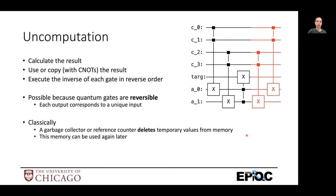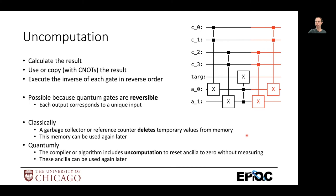So when we do this classically, we have garbage collector reference counter or something that detects you're done using some temporary value and then deletes it from memory. And what it does there is it just marks to say that that memory is not being used anymore, and maybe it overwrites it with zeros.